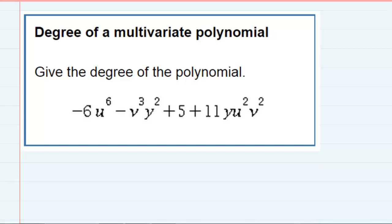Degree of a multivariate polynomial. We're asked to give the degree of this polynomial, and the first thing we notice is that this polynomial has four terms.